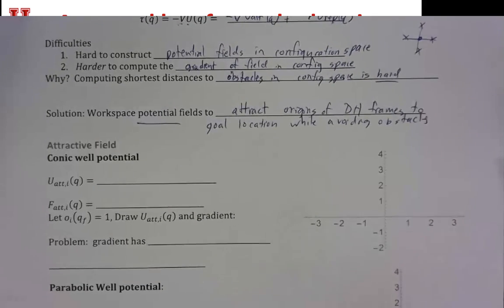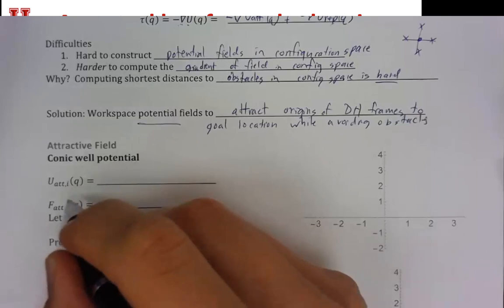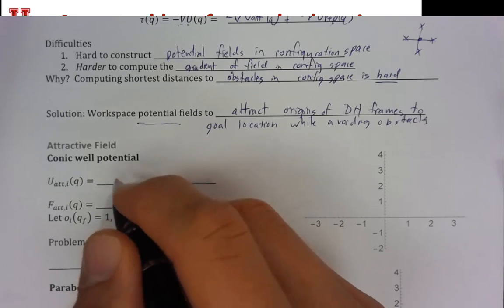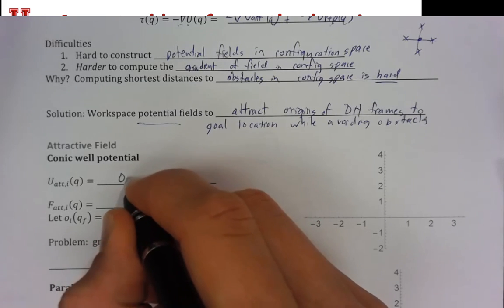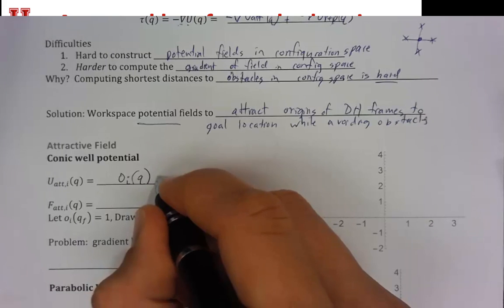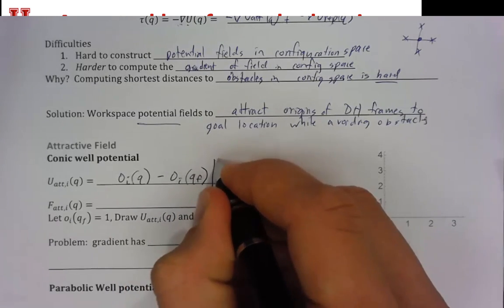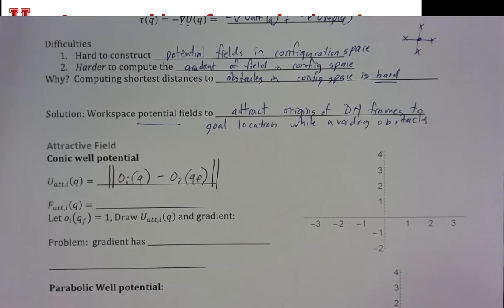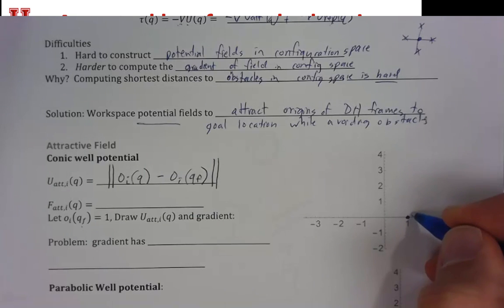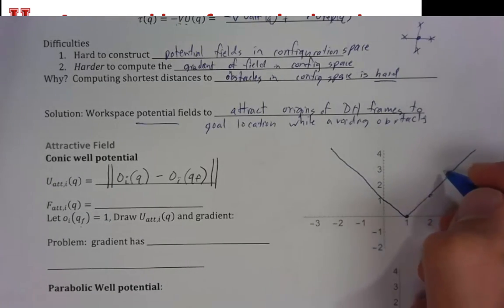Now let's talk about the attractive field, starting with a conic well potential, which is nice and linear. Our potential field is just our distance from the DH frame origin o_i(q) subtracted from our desired final configuration o_i(q_f). We just want the total distance. If I draw this attractive field and say q_final is at one, then in 1D the distance grows linearly — that is my U_attractive.